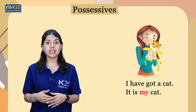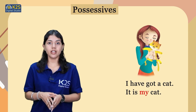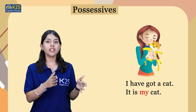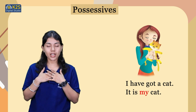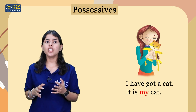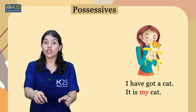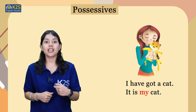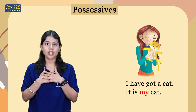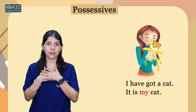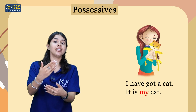In the first picture you can see that there is a girl who is having a cat. The sentence here is: I have got a cat. It is my cat. The girl is showing that the cat belongs to her — she has the ownership of her cat. There is a connection between the cat and the girl. So the possessive here is 'my', showing the connection between the cat and the girl.